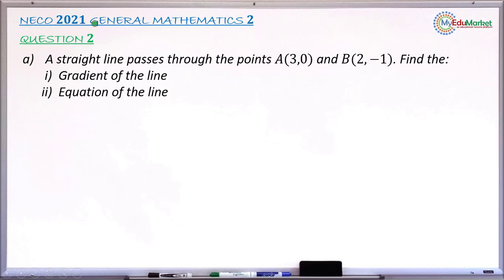This is NECO 2021 general mathematics paper 2, question number 2A. The question reads: a straight line passes through the point A with coordinate 3,0 and also passes through another point B with coordinate 2, minus 1. The question asks us to find Roman 1, the gradient of that line, and Roman 2, the equation of the line.